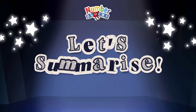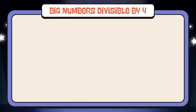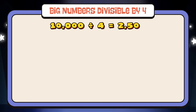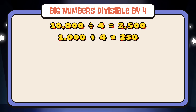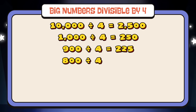Let's summarize. Big numbers divisible by four. Ten thousand divided by four is equals to two thousand five hundred. One thousand divided by four is equals to two hundred and fifty. Nine hundred divided by four is equals to two hundred and twenty-five. Eight hundred divided by four is equals to two hundred.